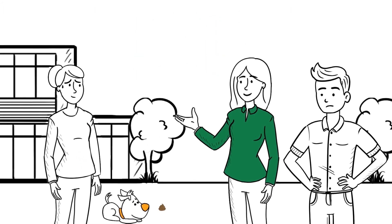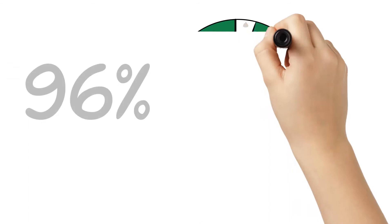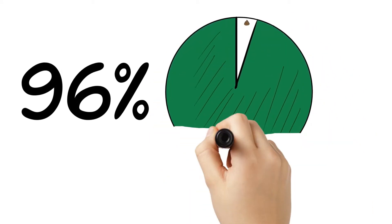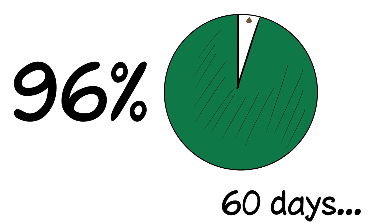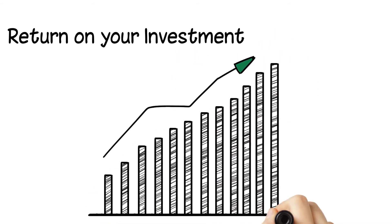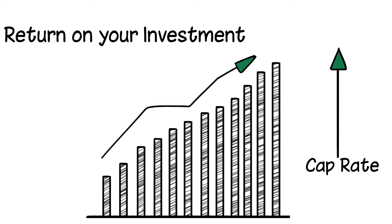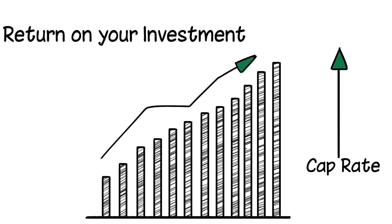By bringing accountability to your residents, Poo Prints eliminates 96% of the dog waste on your property within the first 60 days. Most properties see a return on their investment in the first 6 to 12 months and see monthly ancillary income.